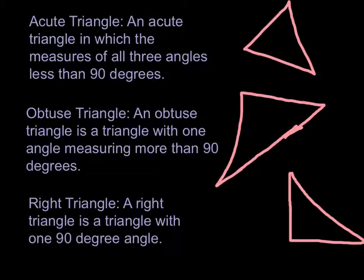An acute triangle is a triangle in which all three angles measure less than 90 degrees. An obtuse triangle is a triangle with one angle measuring more than 90 degrees. And a right triangle is a triangle with one 90 degree angle. I drew examples for each one.